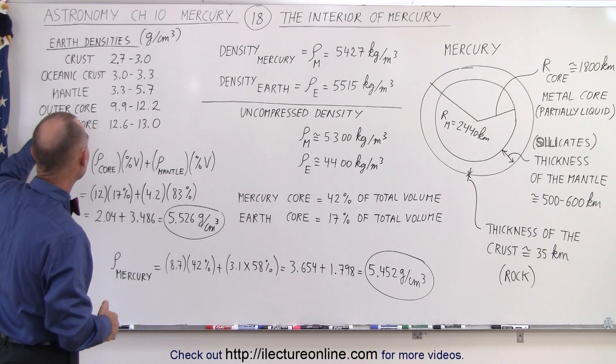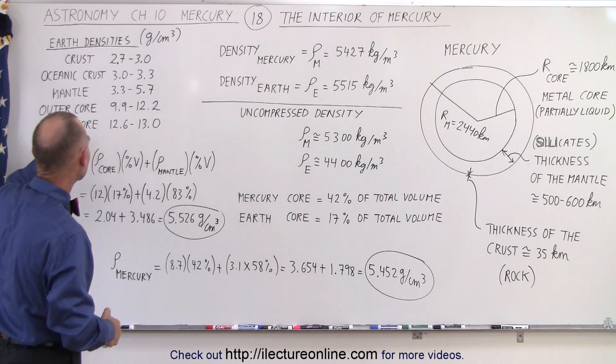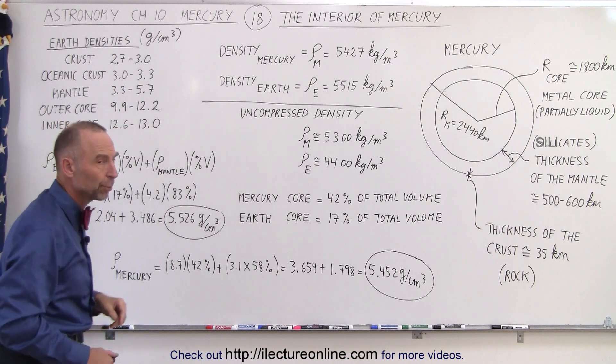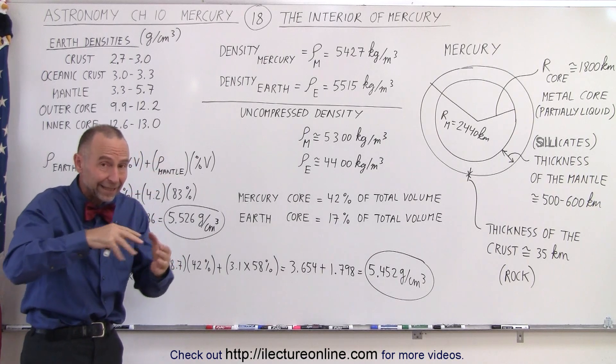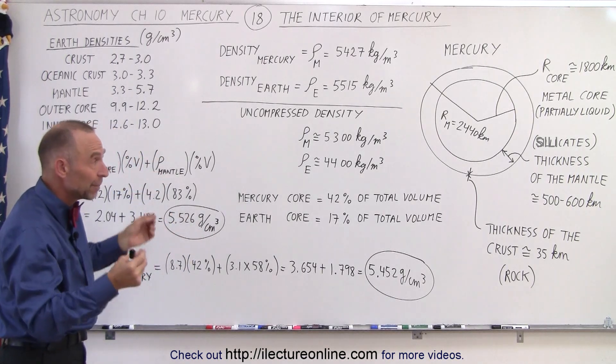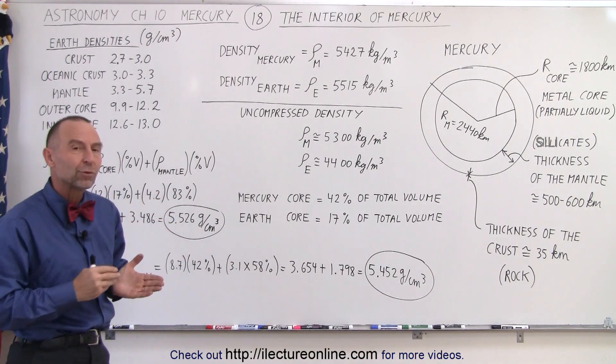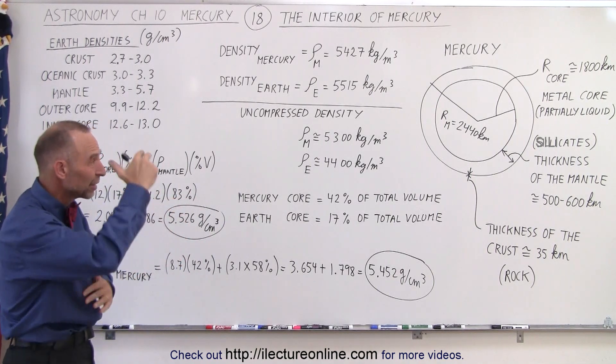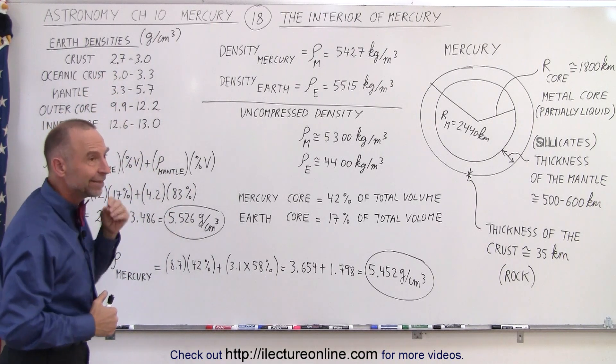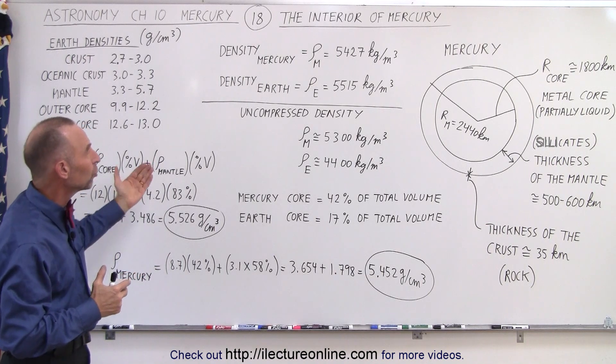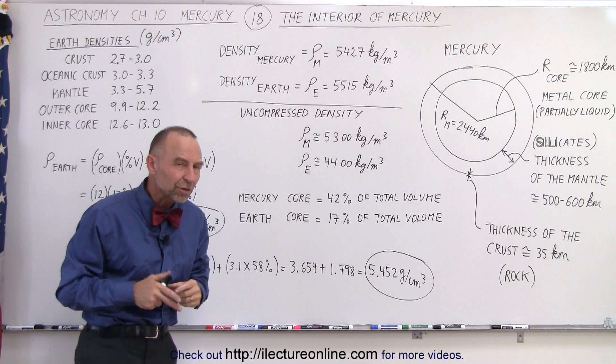And then the outer core has a density of 9.9 to 12.2 and the inner core 12.6 to 13.0. Now these are compressed densities based upon where they're located. With the Earth, we have a fairly good idea because we've studied that using earthquake waves. We know where the various boundaries are, so we have a very good idea of the internal structure of the Earth. We're able to calculate these densities, and when we add them all up they match very closely to the overall density of the Earth.